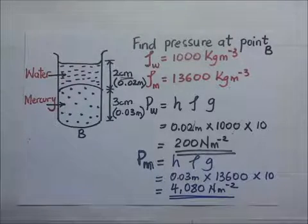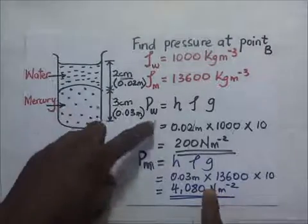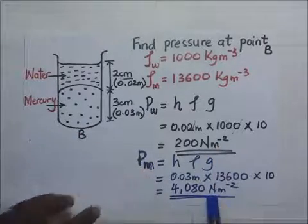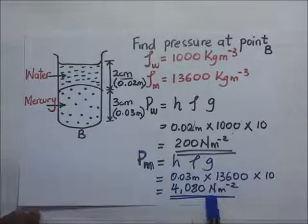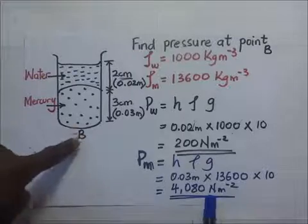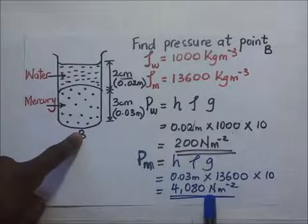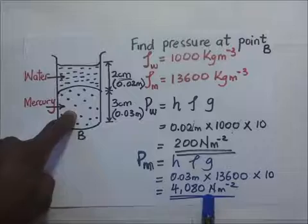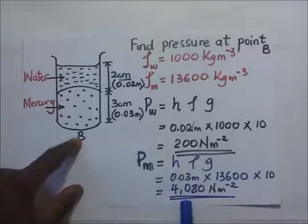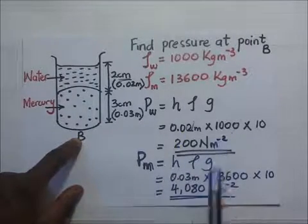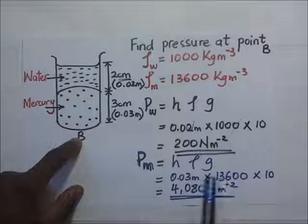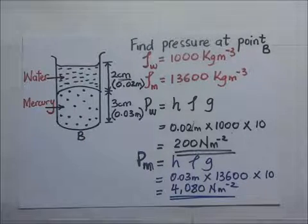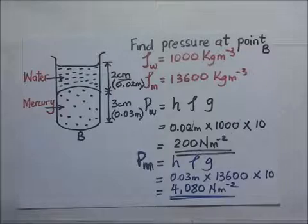We now have the pressure exerted by water, which is 200 N/m², and the pressure exerted by mercury, which is 4080 N/m². The total pressure at point B is the sum: 200 + 4080 = 4280 N/m². That is the total pressure exerted at point B.